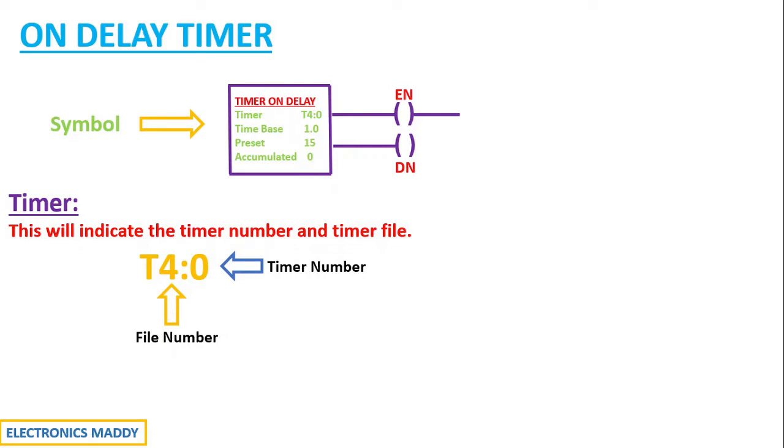But why do we need Timer number? Now let us consider an example where we have 100 timers in a specific program. And all of these 100 timers will have unique address. And in order to identify them uniquely, we need to have Timer number.